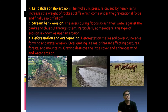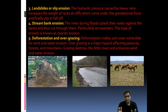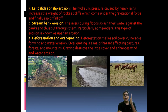Next is stream bank erosion. When a river overflows during a flood or flash flood, both sides or one side of the river get eroded, and the soil is also eroded. This type of erosion is known as riparian erosion, as well as stream bank erosion.